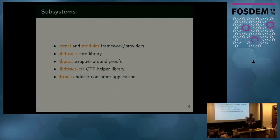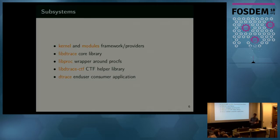On Solaris, we used to have a Java wrapper so you could use the library from Java. You should be able to get D-trace integrated into other languages like Python or Go — basically whatever can bind the C language — but it's not easy. I've tried Go and it's not so easy.